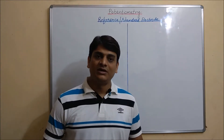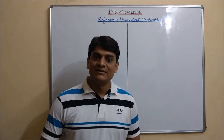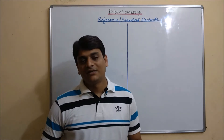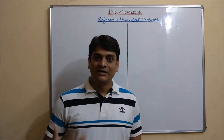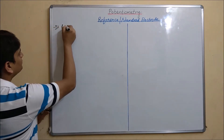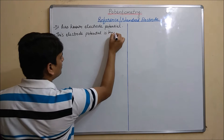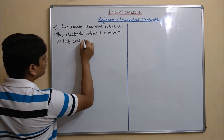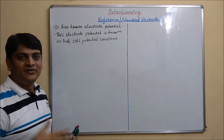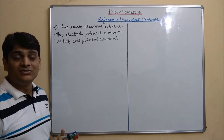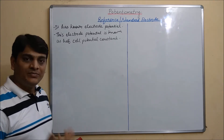Today I am going to discuss about reference or standard electrode. A reference or standard electrode has a known electrode potential, as I have already discussed regarding standard electrode potential. The potential of this electrode is known as half cell potential and it is constant. For example, the standard hydrogen electrode has a potential of 0.00, zinc has a potential of minus 0.76, and copper has a potential of plus 0.34.